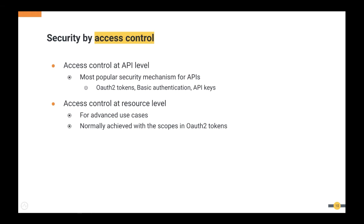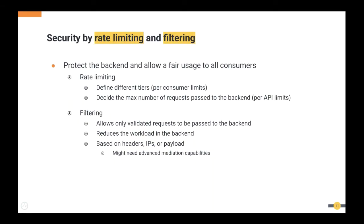Access control at the resource level is for advanced use cases. In a simple case you may expose your entire API to a subscriber, but there may be cases where you want to let them access only certain resources. For example, if your API has read and write operations, you might let a dashboard application invoke only read resources and another consumer perform write operations too. Using OAuth tokens and scope capabilities, you can control access at the resource level.